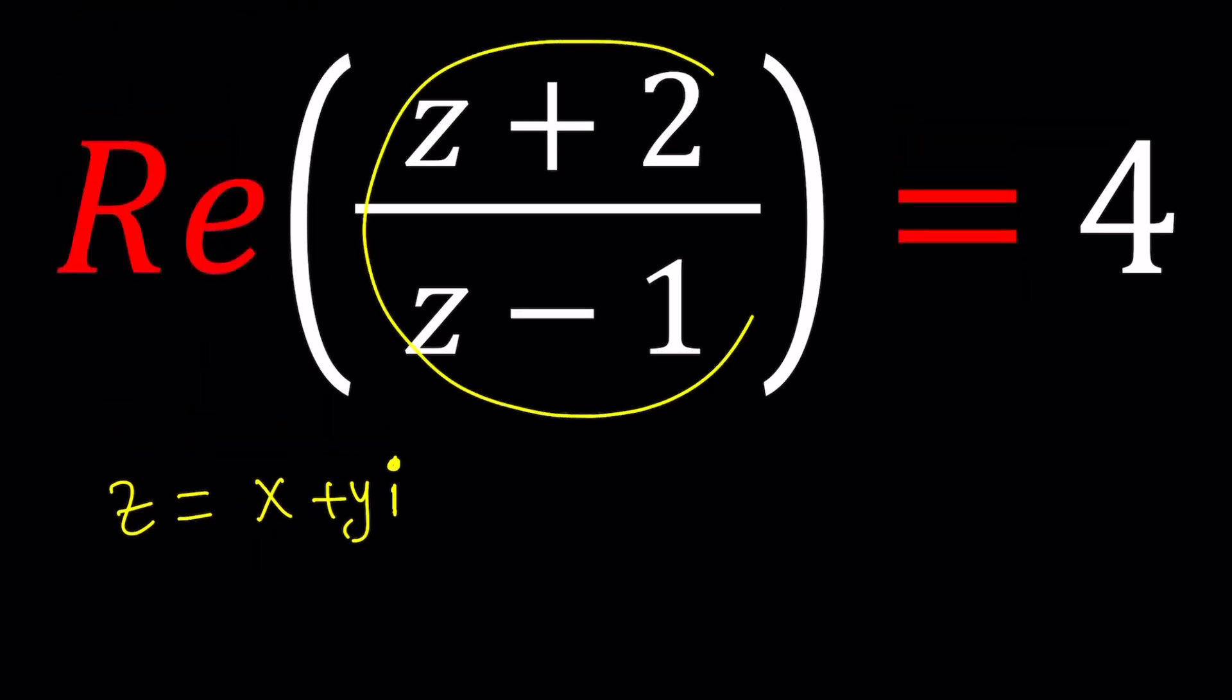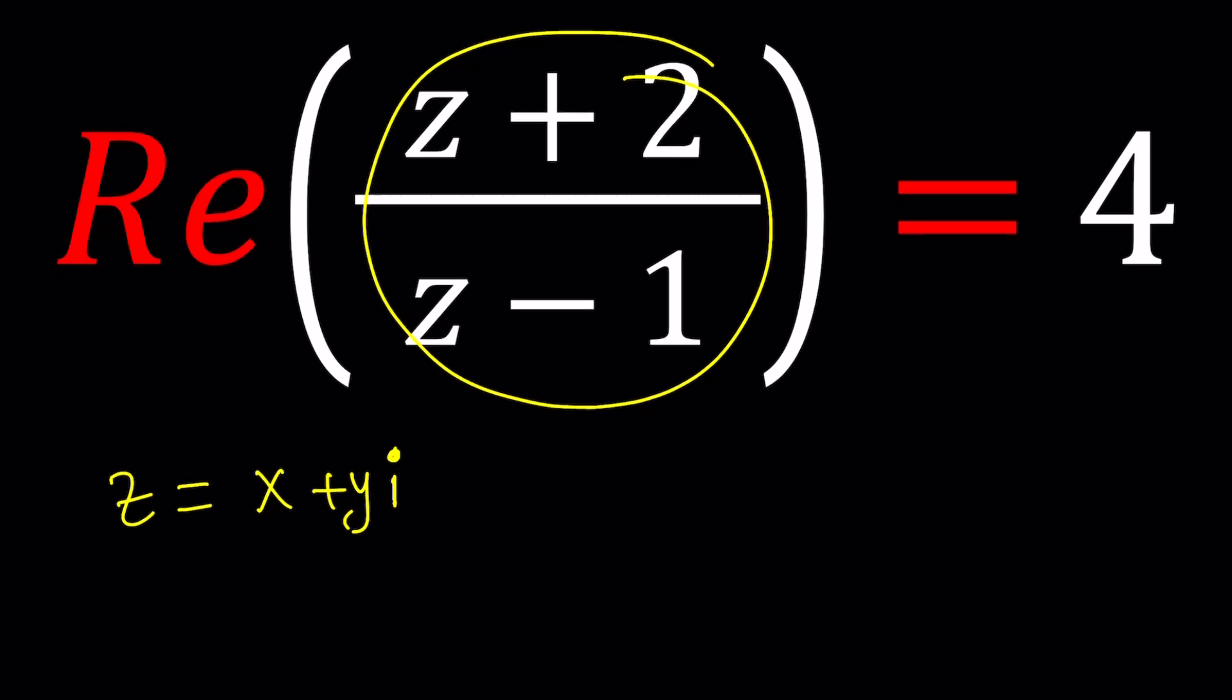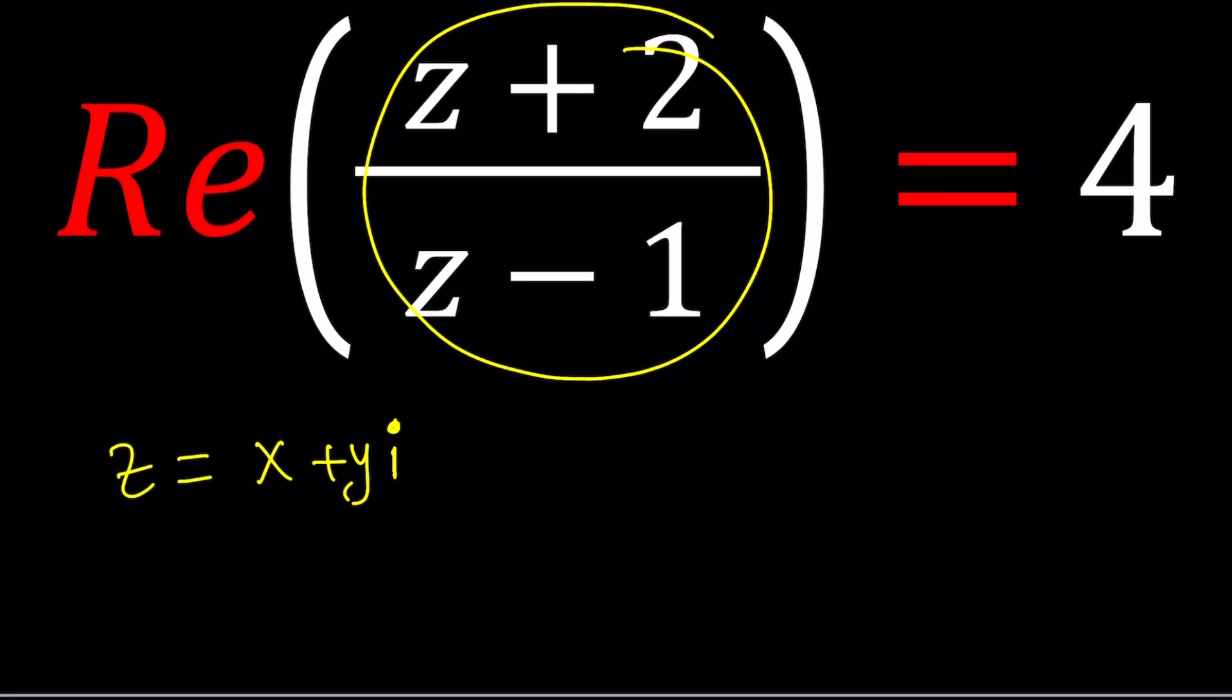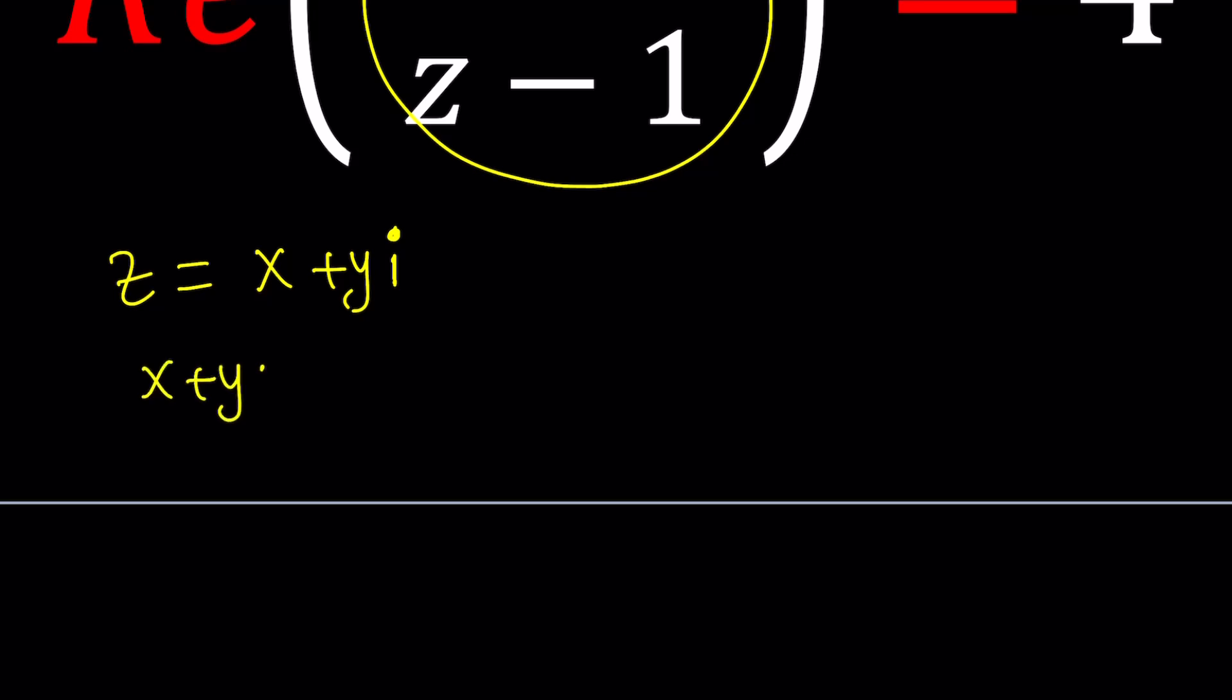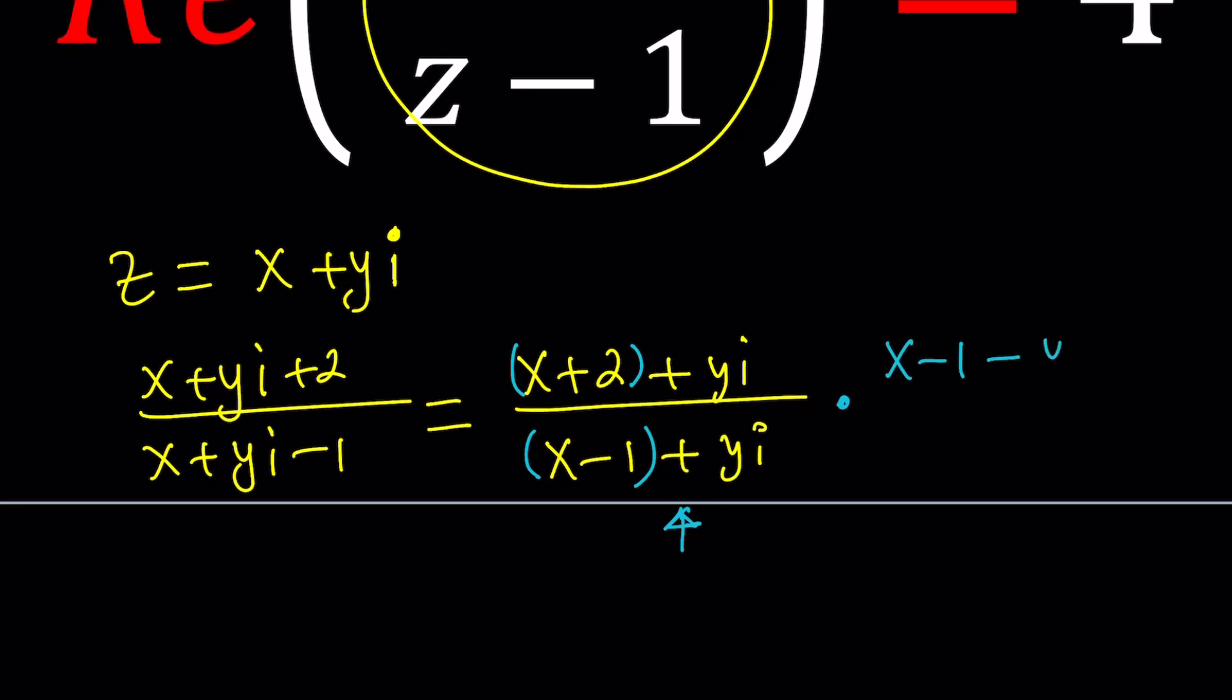Let's write this as a fraction and we're going to do a little bit of work on that. So forget about the Re for now or the real part. z plus 2 is going to be x plus y I plus 2 and z minus 1 is going to be x plus y I minus 1. Now we can write this as (x+2) plus y I and the bottom as (x-1) plus y I. Let's separate the real and imaginary parts so we can see better what to do. In this case, you would multiply the top and the bottom by the conjugate of the denominator, which is (x-1) minus y I.